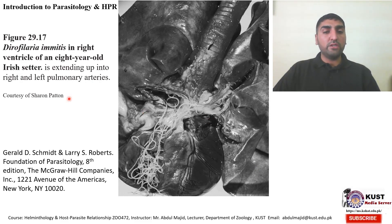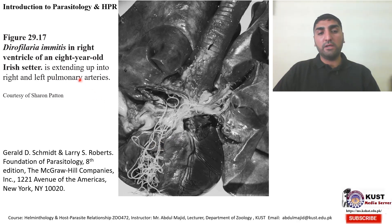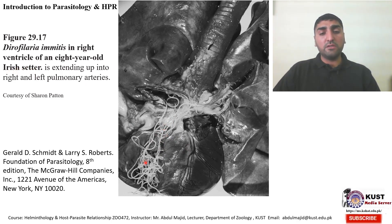In this picture you can see Dirofilaria immitis — the heartworm — in the right ventricle of an eight-year-old Irish setter, extending up into the right and left pulmonary arteries. This is the heart of the eight-year-old Irish setter — the person who belongs to Ireland is called Irish — and you can see these worms in the heart of this old setter.